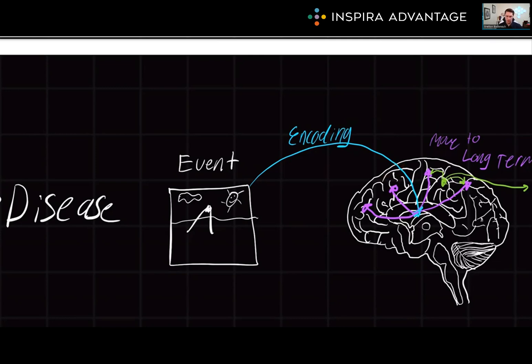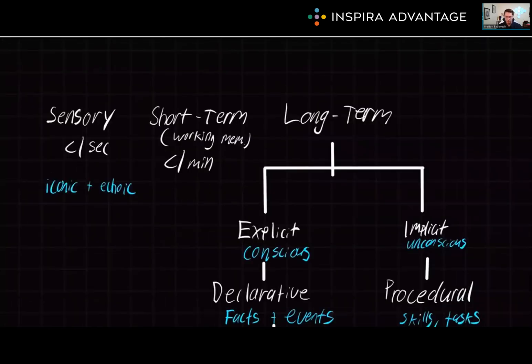But before we dig into that, let's take a look at how we can organize human memory. It can be organized into three main branches. We have sensory memory, short-term memory, and long-term memory.